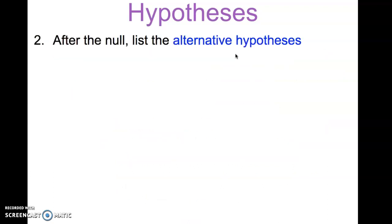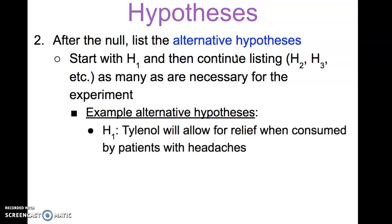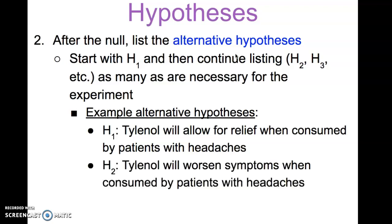This is different than the alternative hypothesis. After we state our null hypothesis, we then want to go on and state our alternative hypothesis. That starts with H₁ and then continues. We can make many H₂, H₃, etc., as many alternative hypotheses that the researcher would deem necessary for the experiment. An example alternative hypothesis would be: Tylenol will allow for relief when consumed by patients with headaches. The second alternative hypothesis might read something like: Tylenol will worsen symptoms when consumed by patients with headaches.